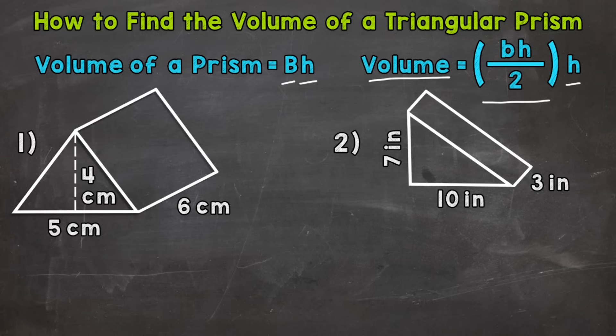Congruent means same exact size and shape. We name prisms by their bases — that's why we call this a triangular prism, because our bases are triangles. Now the height is going to be the distance between those bases. The height isn't necessarily going to be vertical or up and down; it's defined by the distance between those bases.